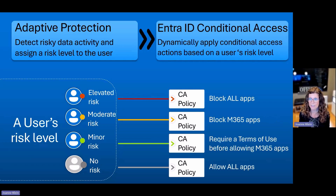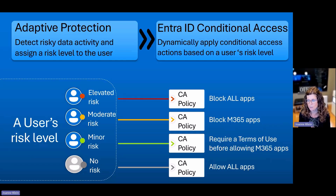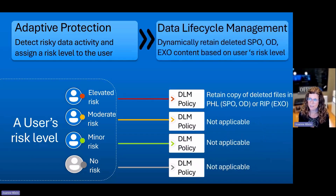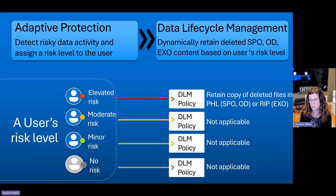The next control, currently in preview, is Entra ID conditional access. This is dynamically applying the conditional access actions and policy based on a user's risk level. As you go from no risk up to elevated, it becomes more and more restricted on what the conditional access policy does. The last one is data lifecycle management — a retention label policy that is automatically configured for you. When unlabeled files are deleted from SharePoint or OneDrive, they are preserved in the hidden preservation hold library on that same site. Or if Exchange emails are deleted, they are preserved in the recoverable items partition in the Exchange mailbox.